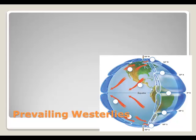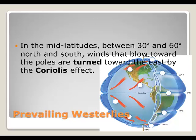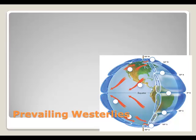The prevailing westerlies — we live in the prevailing westerlies. They blow from west to east, away from the horse latitudes, in the mid-latitudes between 30 degrees and 60 degrees north and south. These winds are deflected to the east by the Coriolis effect, so the wind comes from the west.